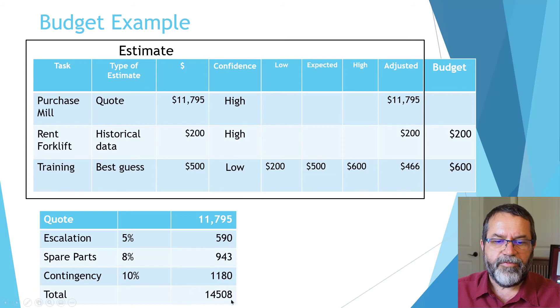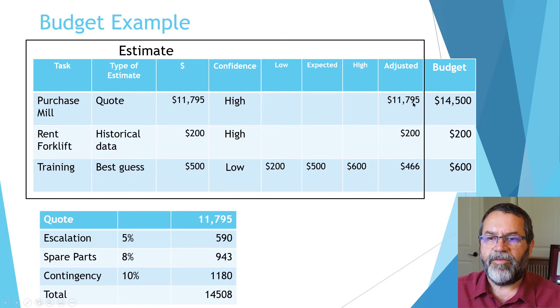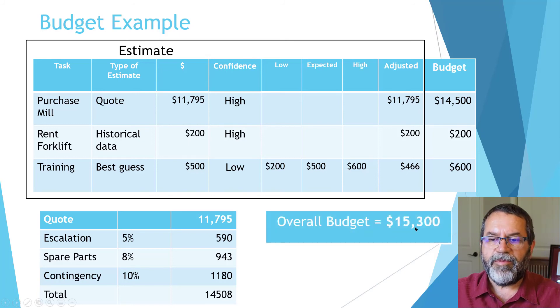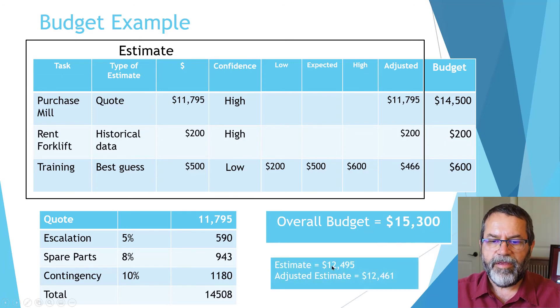Now I've got a total of $14,508, and I'm going to plug in $14,500—that's my budget amount. It's not my estimate. I estimated the cost at $11,795 for just the machine. Once I added escalation, spare parts, and contingency, I'm budgeting $14,500. My overall budget adds up to $15,300.